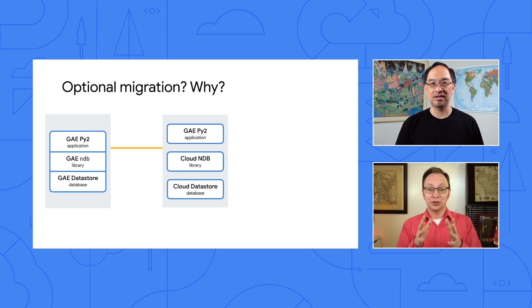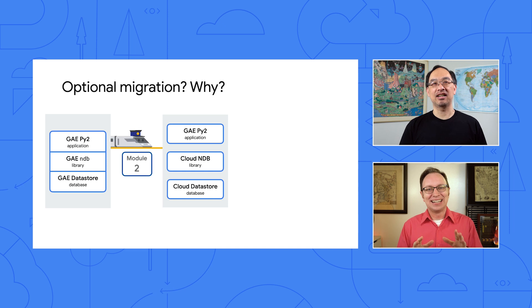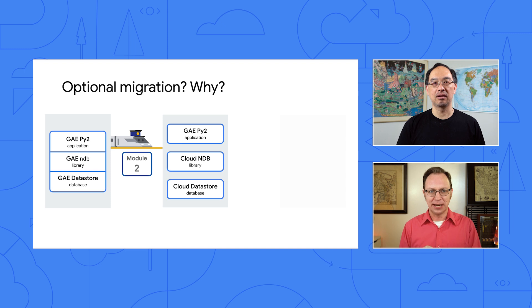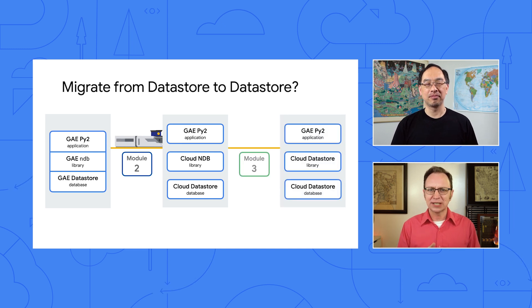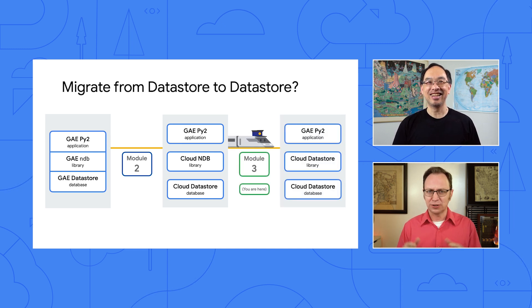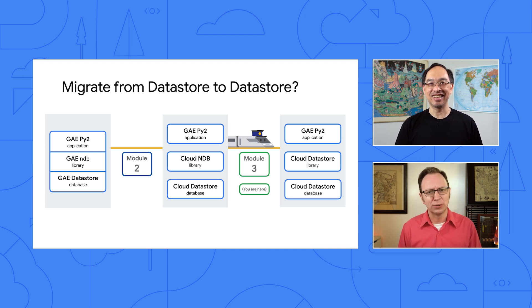Because App Engine Datastore and Cloud Datastore point to the same database in your project, one great feature of that migration is that you didn't have to migrate the data, only doing the app migration. I know how to migrate from App Engine NDB to Cloud NDB now. I'm also pretty sure you said that by migrating to Cloud NDB, I'd be accessing Cloud Datastore. But didn't you just say we're migrating to Cloud Datastore today? If I'm already on Cloud Datastore, why would you want me to migrate to it? I'm confused.